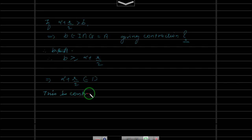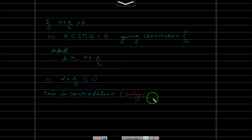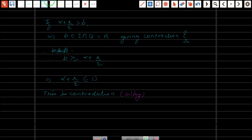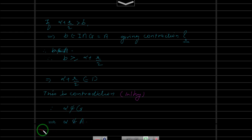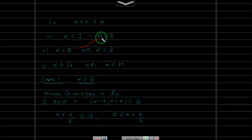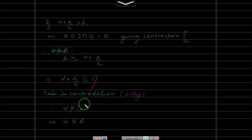This is a contradiction. Therefore alpha does not belong to G, which implies alpha does not belong to A. So alpha is not in A. Let us proceed to Case 2.